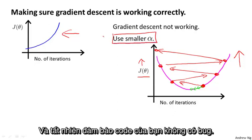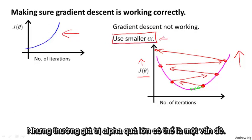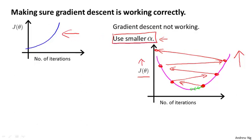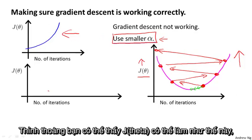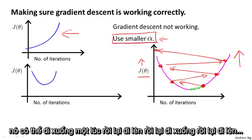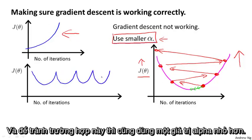Of course, also make sure that your code does not have a bug in it, but a too-large value of alpha is the most common problem. Similarly, sometimes you may also see J(θ) do something like this: it goes down for a while, then goes up, then down for a while, then up, and so on. The fix for something like this is also to use a smaller value of alpha.